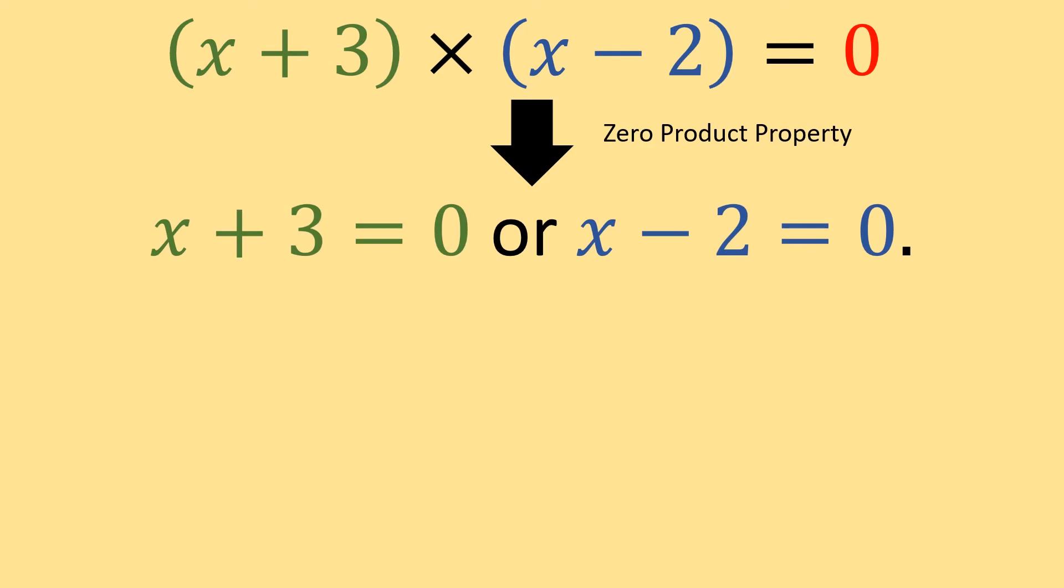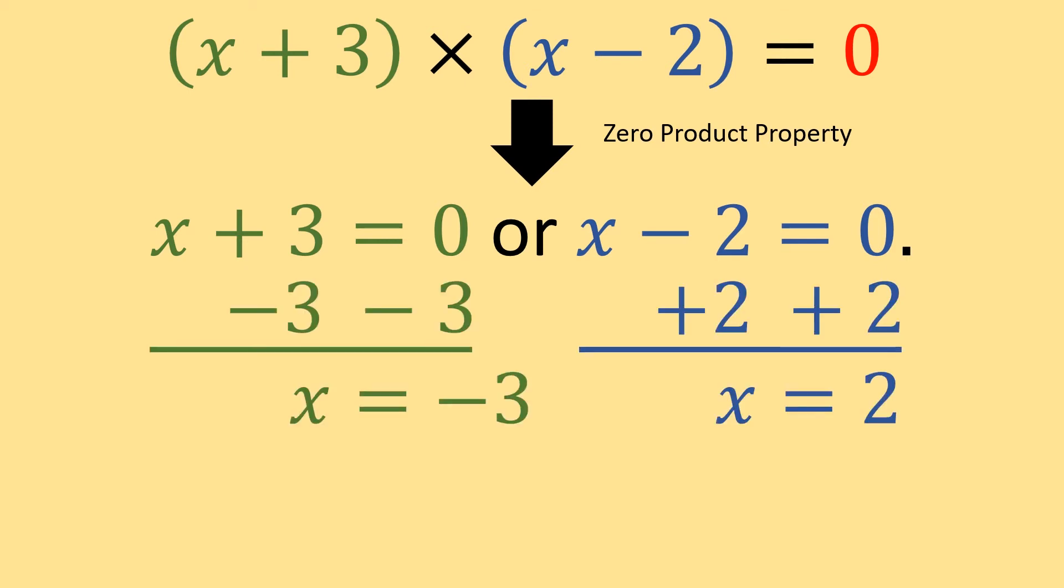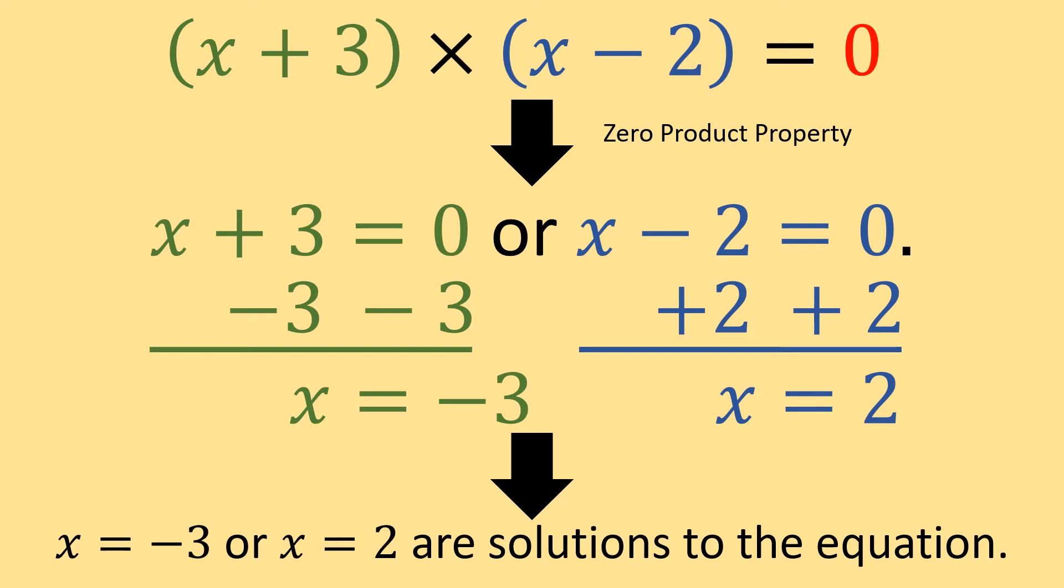Now that we got x plus three equal to zero, we simply want to isolate x on the left side, so we would subtract three, and we'd get x equals negative three, and then for x minus two equals zero, we would add two to both sides and get x equals positive two.